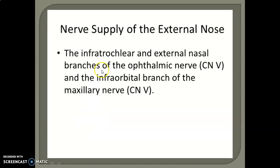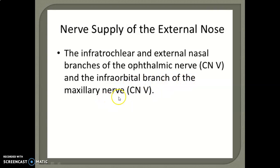The nerve supply of the external nose comes from the infratrochlear and external nasal branches of the ophthalmic nerve, and the infraorbital branches of the maxillary nerve.